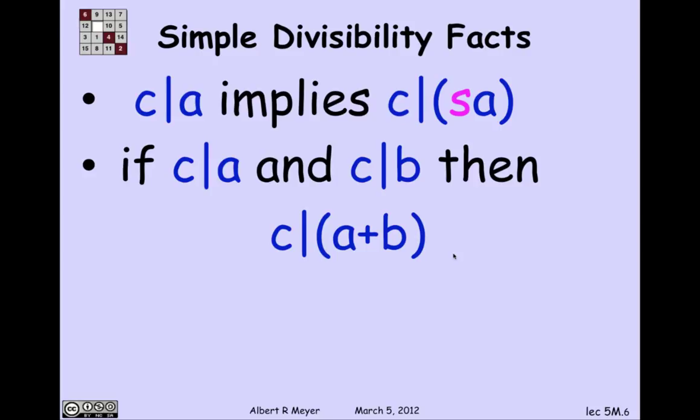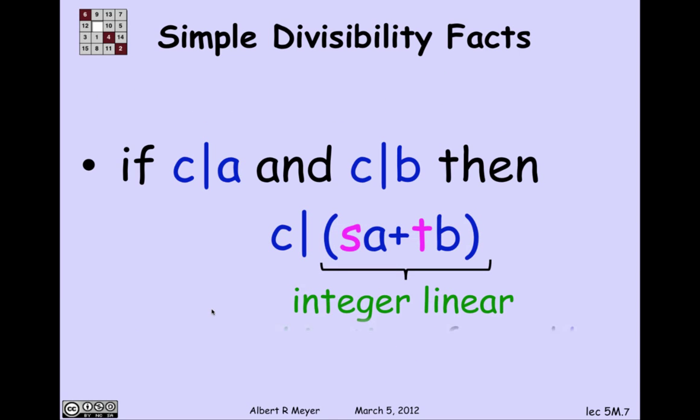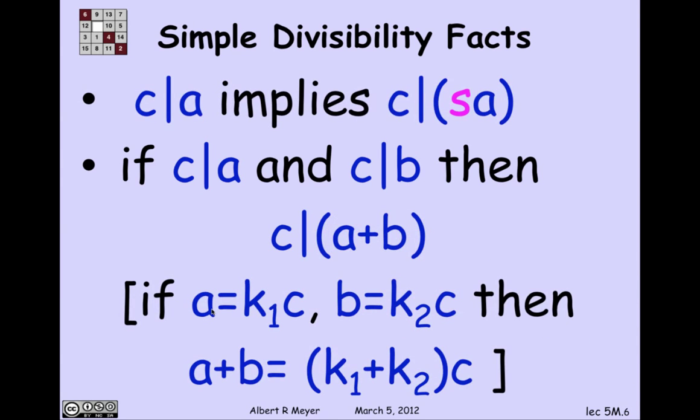So we have just verified this fact that if C divides A, then C divides a constant times A. As a matter of fact, if C divides A and C divides B, then C divides A plus B. Let's just check that one. What we've got is C divides A means that A equals K1 times C, and C divides B means that B equals K2 times C. So that means that A plus B is simply K1 plus K2 times C, where what I've done here is used the distributivity law to factor C out.